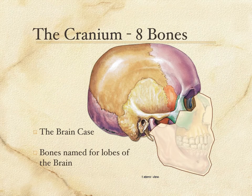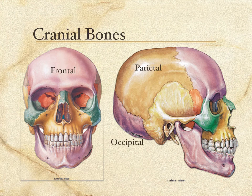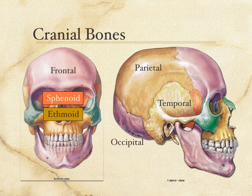So the cranium: eight bones, the brain case. A quick naming of them: the frontal bone, the two parietal bones, the occipital bone posteriorly, two temporal bones, the sphenoid bone in orange — you can see it as the back wall of the orbit — and then in the nasal area, the ethmoid bone. These are the bones of the skull.